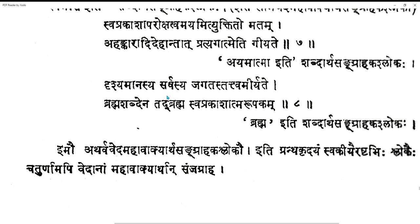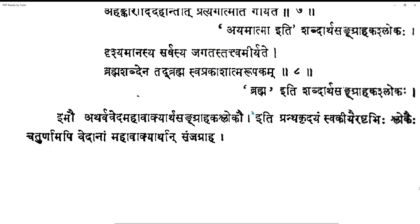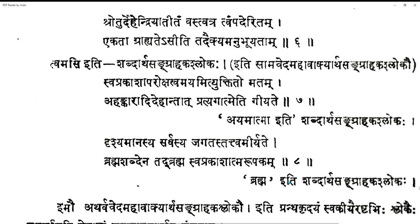Drishya Maanasya Sarvasya Jagatas Tattva Meeryatye Brahma Shabdeenatat Brahma Svaprakashatma Rupakam. What is this Brahma? The entire Prapanchya Jagat which is seen — Drishya Maana — in reality Jagat is not there. Sarvam Khalvidam Brahma — Vada Samanadhi Karanyam, only Brahma is there which is I. Brahma Shabdeenat Tatt Brahma itself appears as this Prapanchya; Nama Rupa has no presence per se.